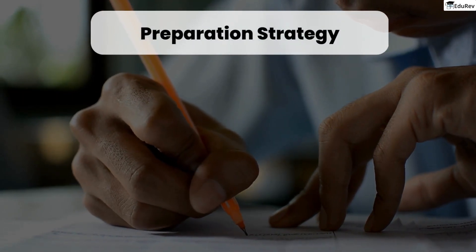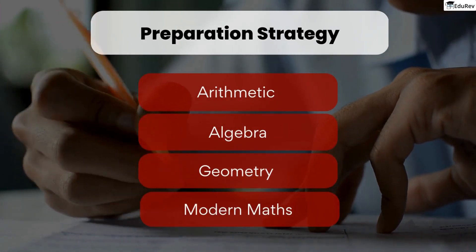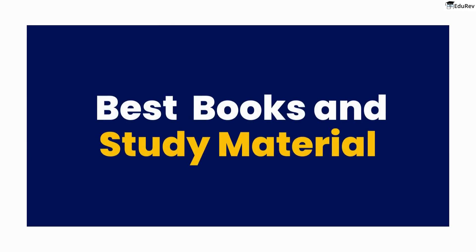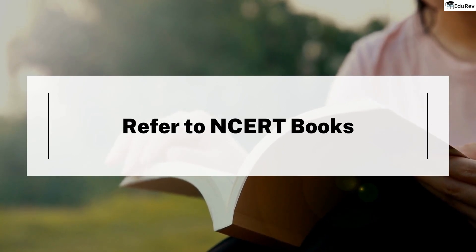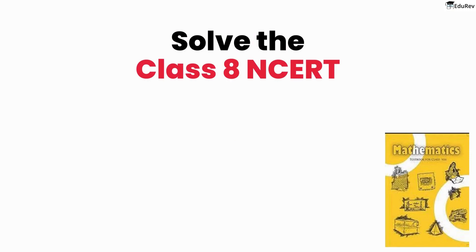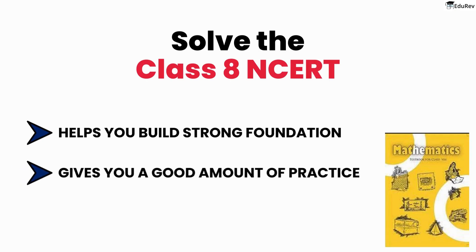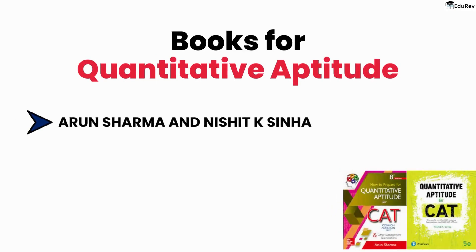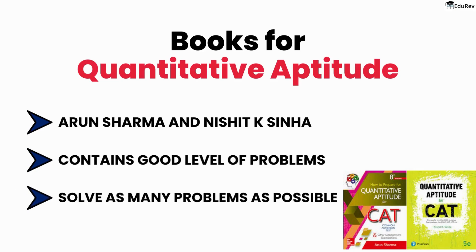After devoting your first week to Vedic maths, start your preparation with arithmetic, moving on to algebra, geometry, and finally modern maths. Once you have set a solid foundation, it's time to explore the best books and study materials to further enhance your skills in the QAN section. First and foremost, make sure to go back to the basics and refer to your NCRT textbooks — solve the entire Class 8th NCRT book cover to cover. This will not only help you build a strong foundation but also give you a good amount of practice. When it comes to concept building, Arun Sharma and Nishit K. Sinha's books are an absolute must-have, as they have been the go-to resource for CAT aspirants for years.